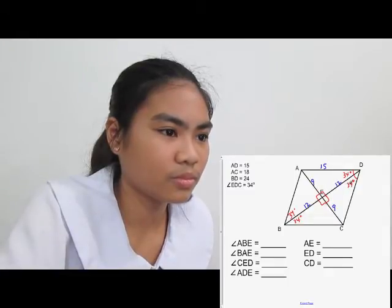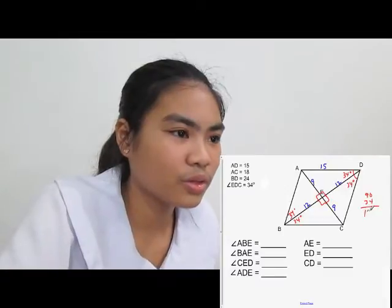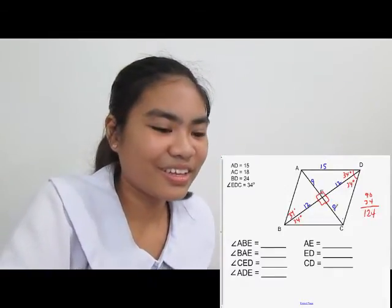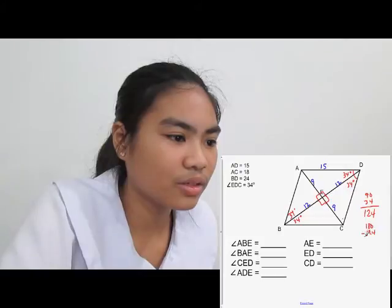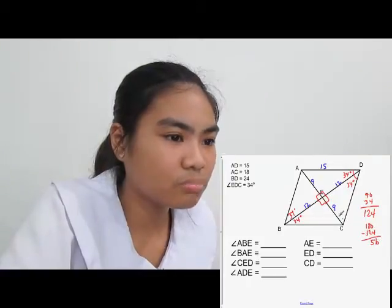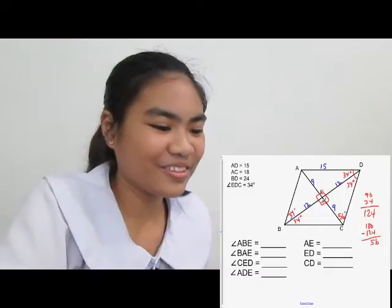We know the middle is 90 degrees — all right angles. Any triangle must add up to 180, so 90 plus 34 equals 124. Then 180 minus 124 equals 56, so the remaining angle in that triangle is 56 degrees. Since all four triangles have a 90 and a 34, all the other angles must be 56 degrees.